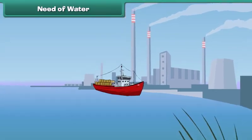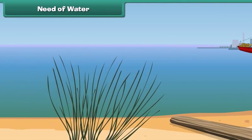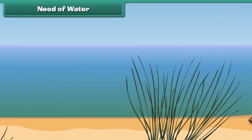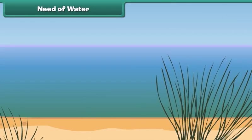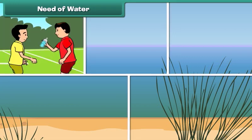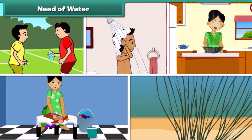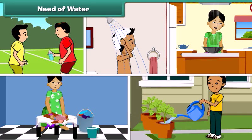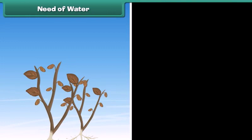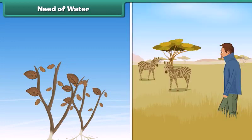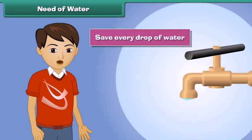We know air is very essential for our life, but did you ever wonder why water was so important? We need water to drink, to bathe, to cook, to wash our clothes, to water plants, and for so many other reasons. Without water the plants would die and people and animals would go thirsty. So children, save every drop of water and don't let it go to waste.